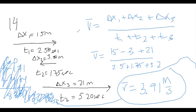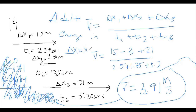Delta, by the way, is a Greek letter meaning change. So delta X is X minus X-naught, where naught — spelled N-A-U-G-H-T — represents your starting point.